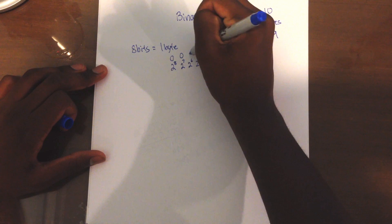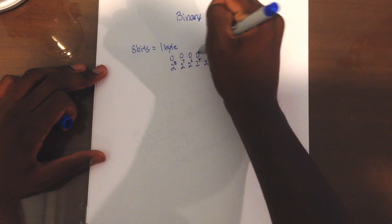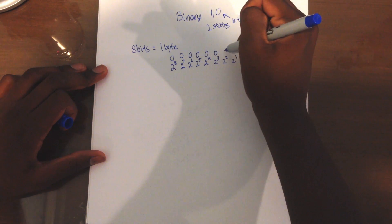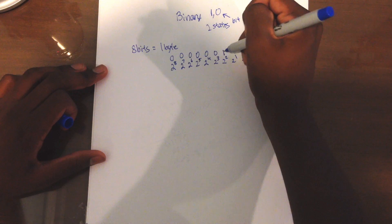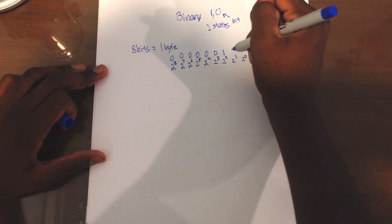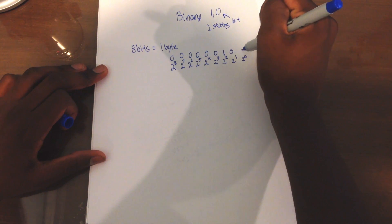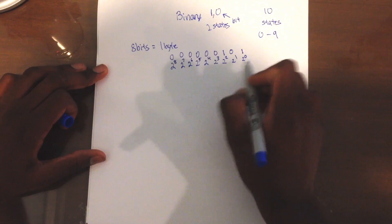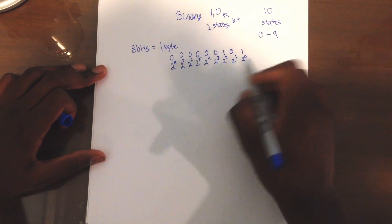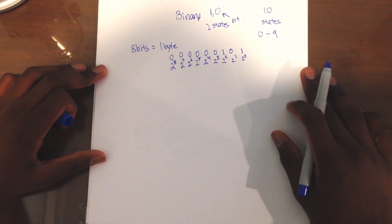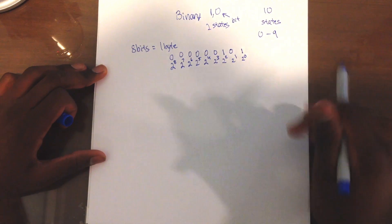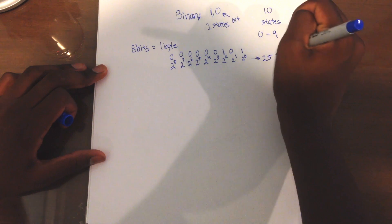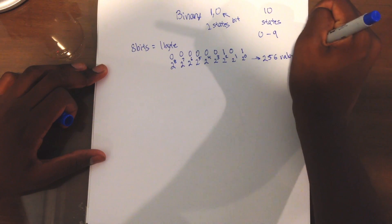So if there's a 0 in each position, but a 1 in one position, that means only that value is counted. With this 2-to-the-8 system, you can have a possible 256 values.